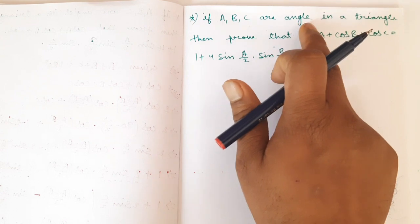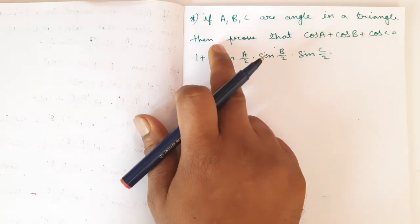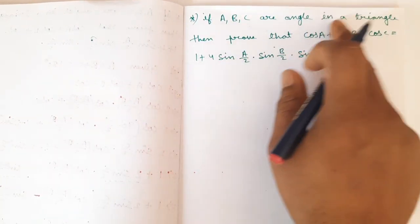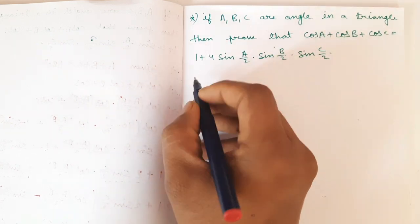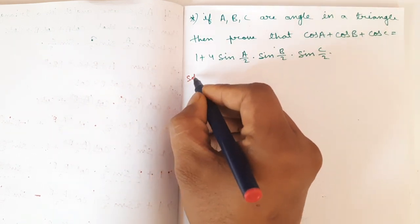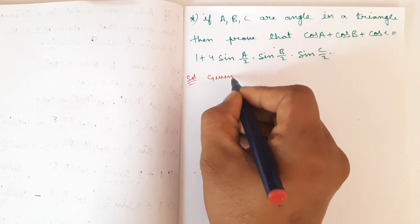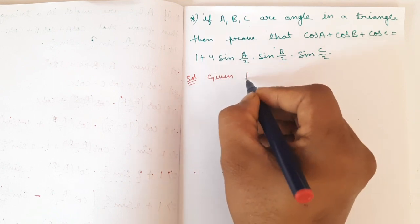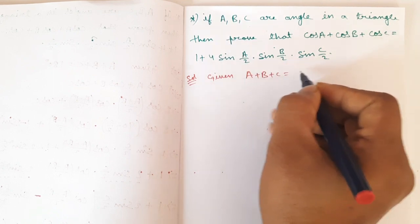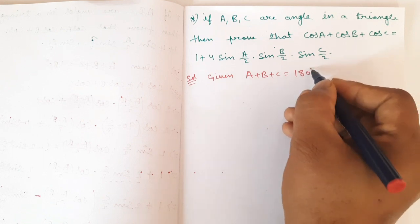If A, B, C are the angles in a given triangle — given triangle — the given data is: A plus B plus C is equal to 180 degrees.